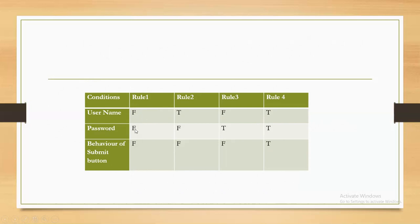Rule one: username is not entered, password is not entered — submit button behavior is disabled. Rule two: username is entered but password is not entered — submit button should still not allow operation, it is disabled. Rule three: username is not entered but password is entered — submit button should still be disabled. Rule four: username is entered and password is entered — then the submit button should be enabled.